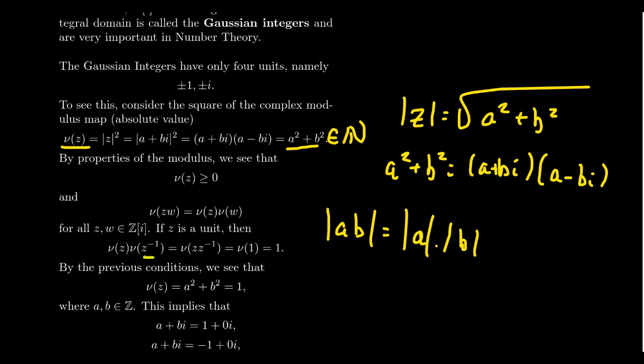So if you have a multiplicative inverse, then the product of the two norms is equal to one, but the norm has to be an integer by our previous observations.